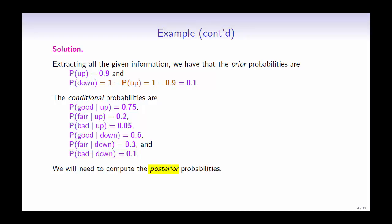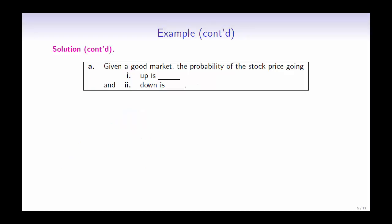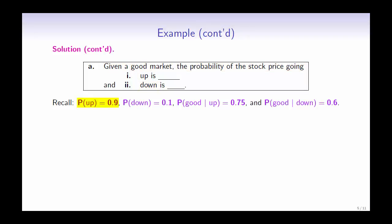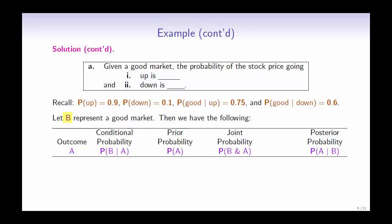We will need to compute the posterior probabilities. For Part A, we will calculate the probability of the stock price going up and down given a good market. Recall that P(up) = 0.9, P(down) = 0.1, P(good market | up) = 0.75, and P(good market | down) = 0.6. Let B represent a good market. For each outcome A, we use the given conditional probability and prior probability to find the joint probability, which will help us calculate the posterior probability.